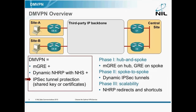We'll go through the three phases. Phase 1, where you have MGRE on the hub and GRE point-to-point on the spoke. Phase 2, where you have MGRE on both hubs and spokes and dynamic spoke-to-spoke connectivity with dynamic IPsec tunnels. And Phase 3, where NHRP redirects and shortcuts help you establish spoke-to-spoke connectivity with partial routing.